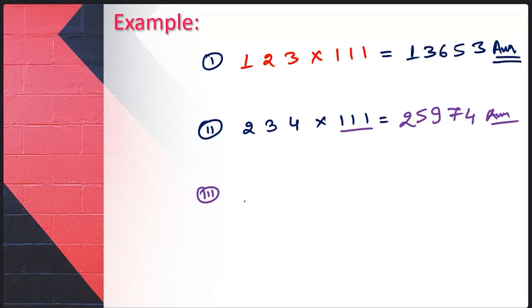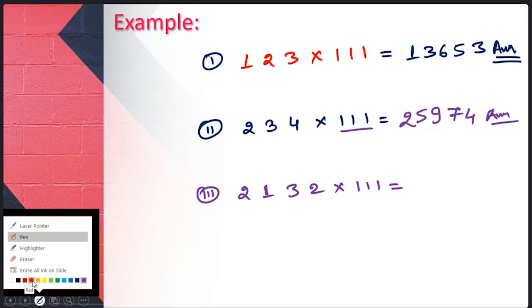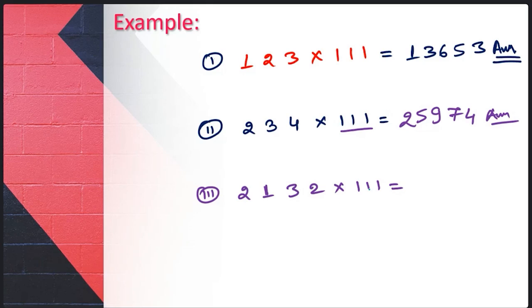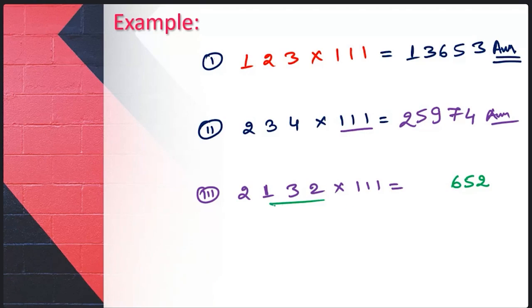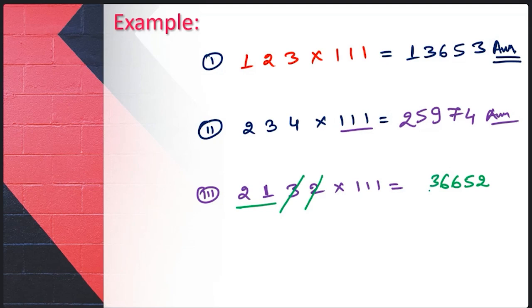Let's take one more example — this time a four-digit number: 2132 multiplied by 111. Start with 2, then 2 plus 3 is 5, then add three digits: 1 plus 3 plus 2 is 6. Now we are adding three digits so we eliminate 2 and add the next three digits: 6, then 1 plus 2 plus — wait, adding again gives 6. This is three digits so we eliminate 1 as well: 2 plus 1 is 3, eliminate 1 and the last value is 2. Answer is 236352.